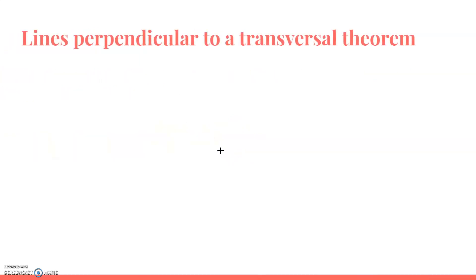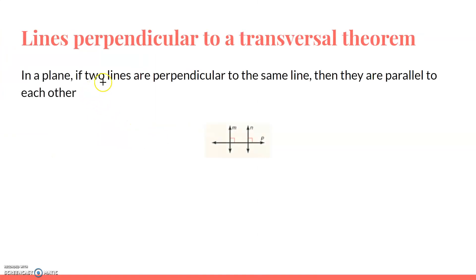The lines perpendicular to a transversal theorem: in a plane, if two lines are perpendicular to the same line, then they are parallel to each other. As you can see here, lines M and N are both perpendicular to line P. Therefore, lines M and N are parallel.